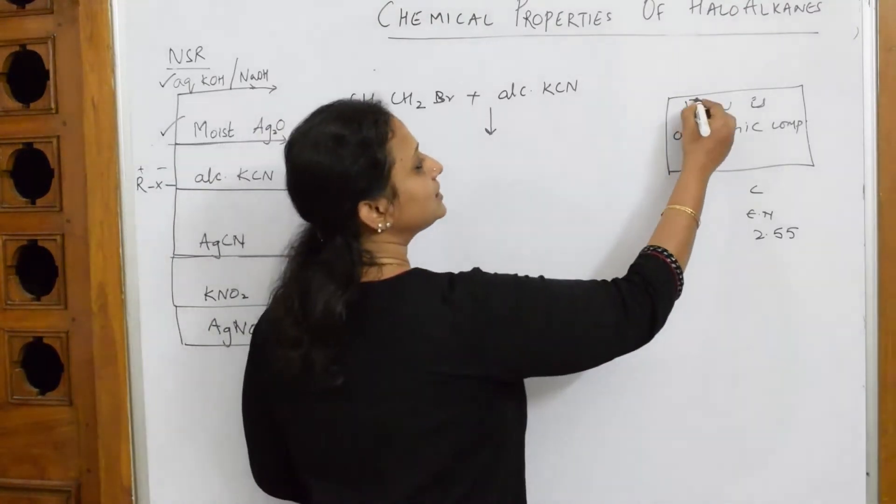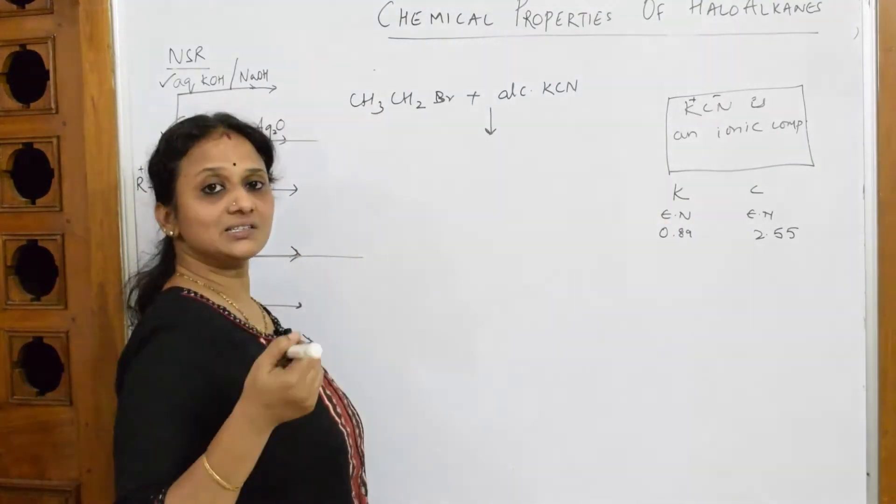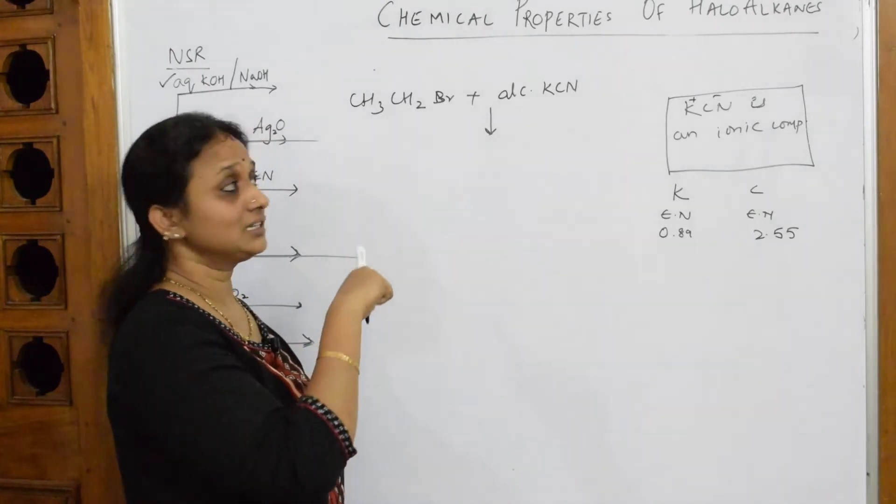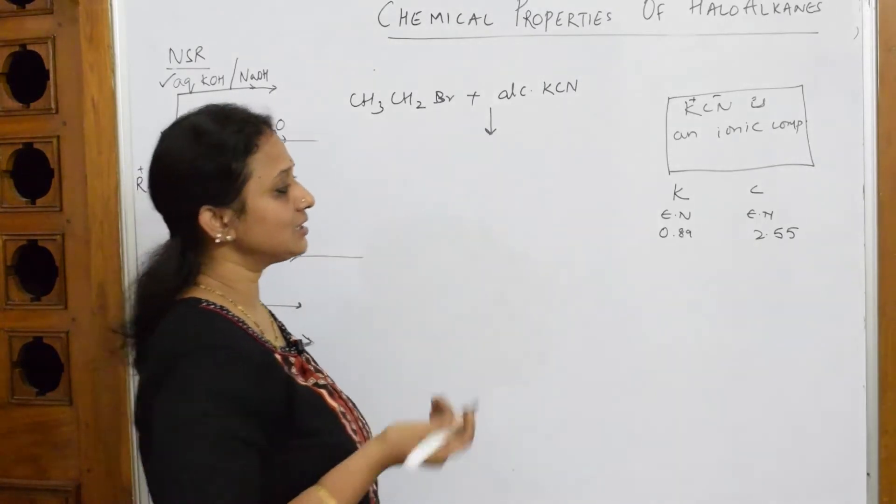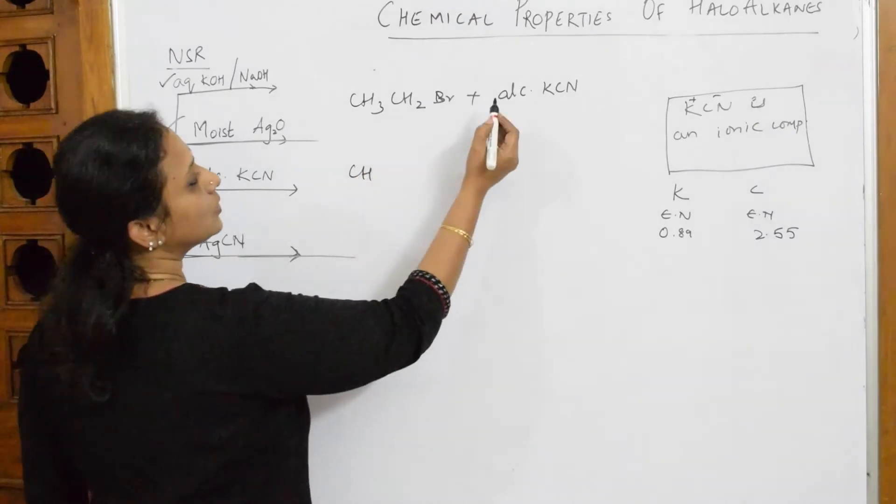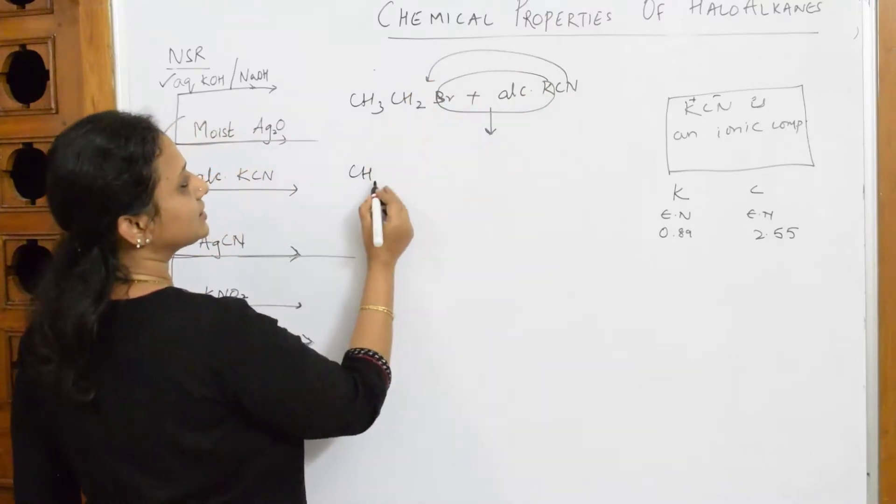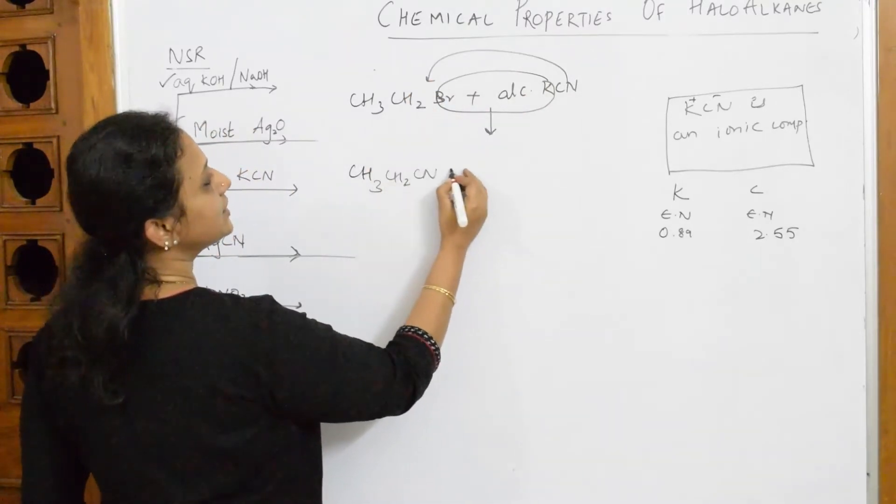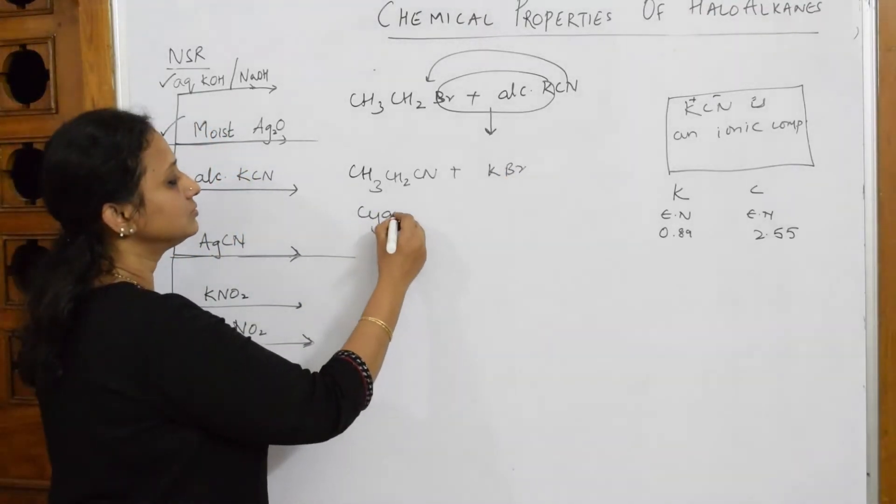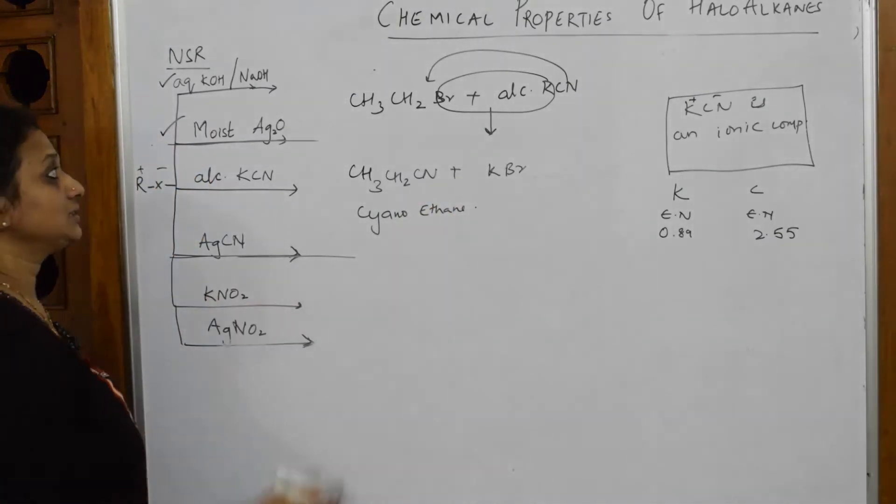The first reasoning question: Why does potassium cyanide form cyano products? I'll write that question. First let me write the product. CH3CH2CN plus KBr. What did I get? Cyanoethane. Very nice.